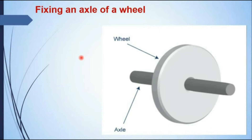By gaining the room temperature, the axle of the wheel expands and the hole contracts, and by this way the axle gets tightly fixed in the hole of the wheel.